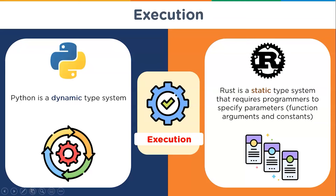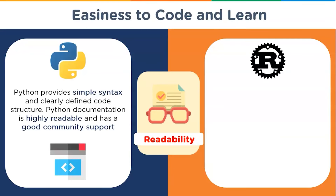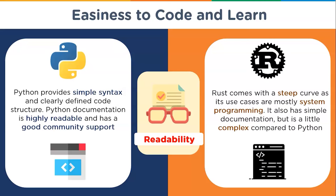Let's see how easy it is to learn and read these languages. Python provides simpler syntax and clearly defined code structure for a simpler development experience. Python documentation is highly readable, which helps quickly develop scalable systems and has good community support. In contrast, Rust comes with a steep learning curve as its use cases are mostly in systems programming. It also has simple documentation but is a little complex compared to Python.